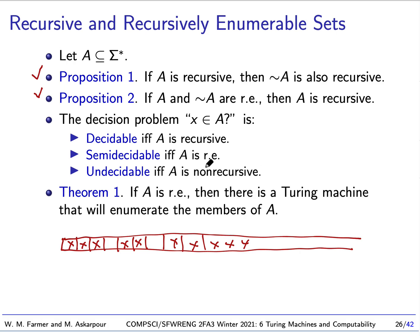Now, a decision problem of the form, does x belong to A? There's three possibilities. One is it's decidable, and that corresponds to A being recursive. Decidable means we get an answer of yes or no.